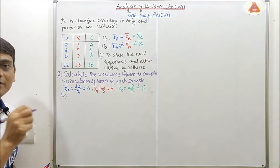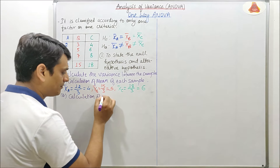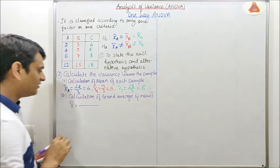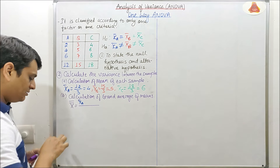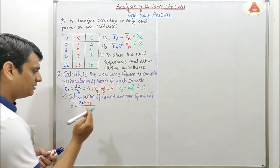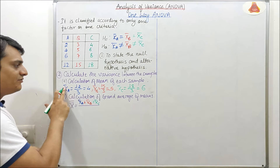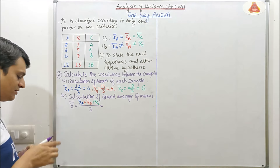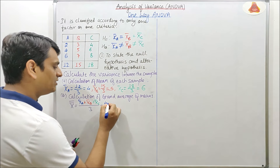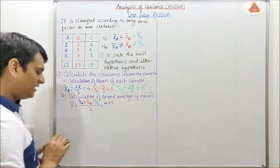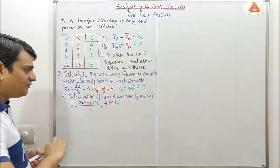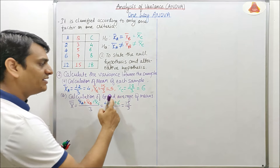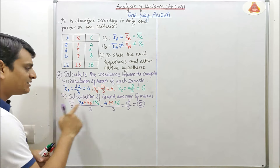Step B is the calculation of the grand average for these means. The grand average X̄̄ = (X̄A + X̄B + X̄C) ÷ 3 = (4 + 5 + 6) ÷ 3 = 15 ÷ 3 = 5. So the grand average X̄̄ = 5.